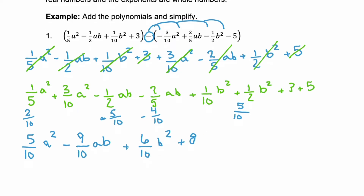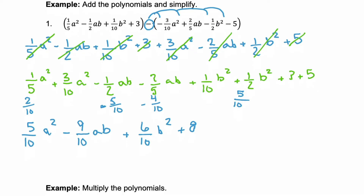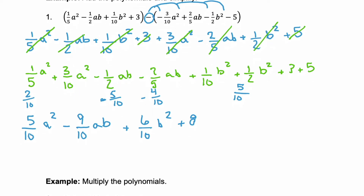We've combined all of our like terms, but notice that these fractions — at least two of them — can be simplified. 5/10: the 5 and the 10 share a 5 in common, so that simplifies to 1/2 a squared. 9/10: nothing in common, so that stays as negative 9/10 ab. 6/10: they share a 2 in common, so this simplifies to 3/5 b squared, plus 8.